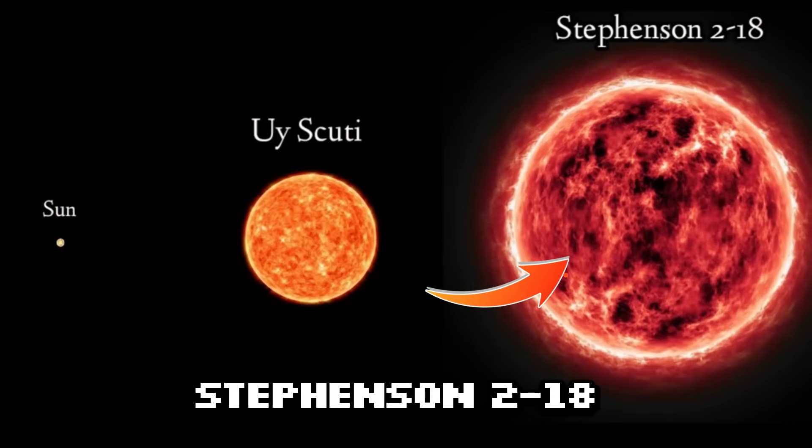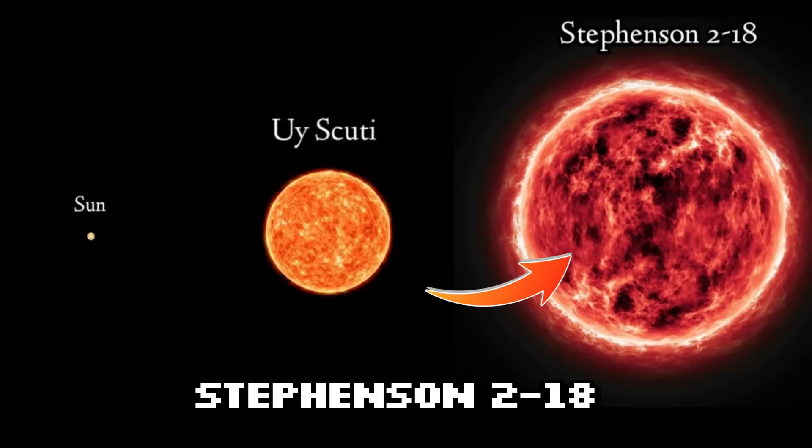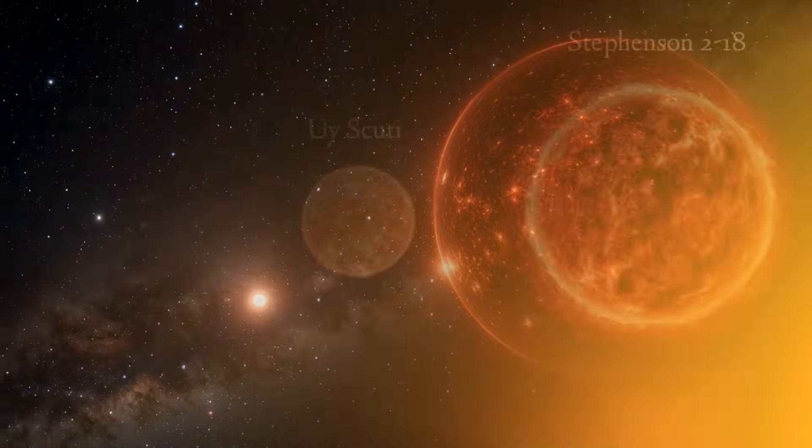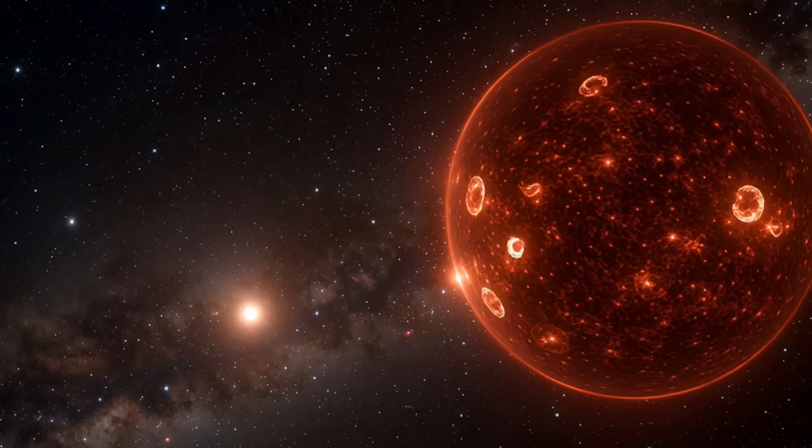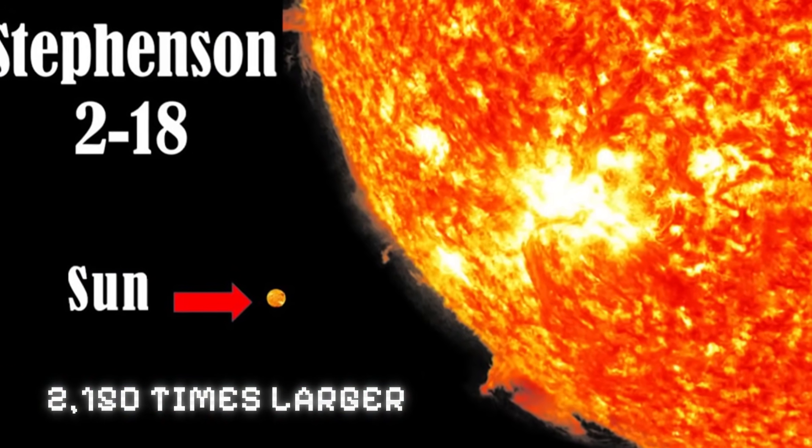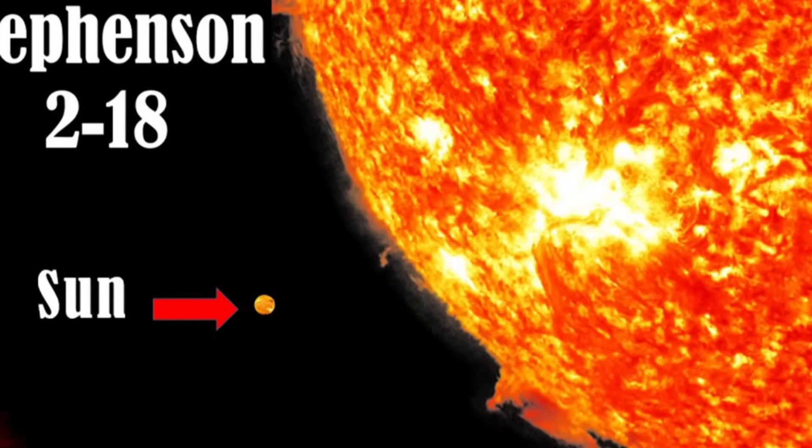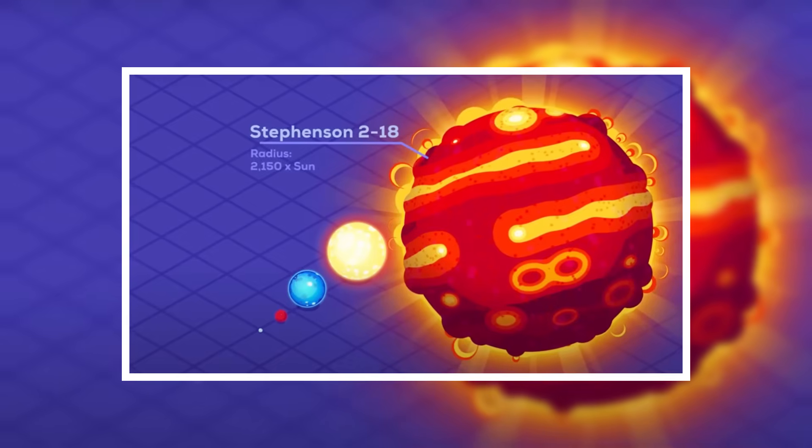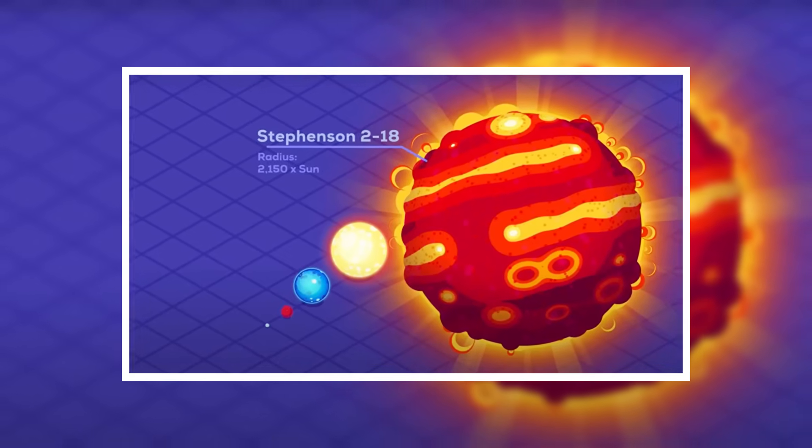There's a star called Stevenson 2-18 that's sitting about 19,000 light years away from us, minding its own business in the constellation Scutum, and this absolute unit is 2,150 times larger than our sun. If you place this monster where our sun is right now, its surface would extend past the orbit of Saturn.